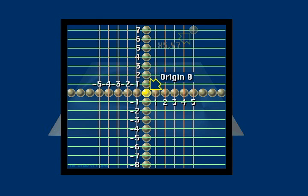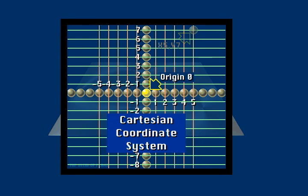This system of defining points within a plane may look familiar. It is called the Cartesian coordinate system, and you may have learned about it in your early school years.